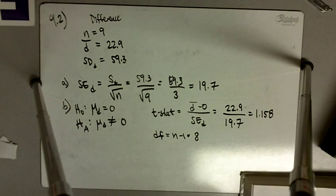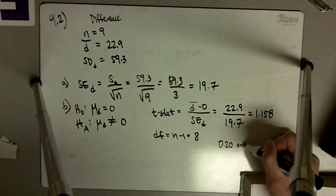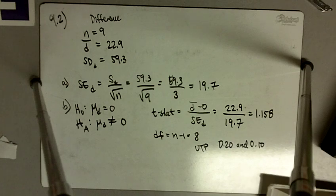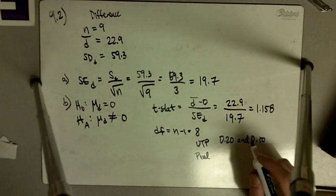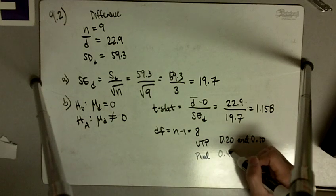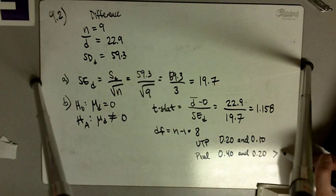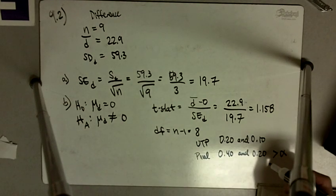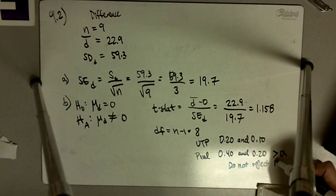And so we want to look for 1.158 in our T table with 8 degrees of freedom. So if we look up 8 degrees of freedom, we see that it's in between 0.20 and 0.10. So our upper tail probability is in between 0.20 and 0.10. And then, so our P value, because it's non-directional, this means our P value has two tails. So we have to double our upper tail probability. So our P value is going to be between 0.40 and 0.20. So we do not have, both of these are greater than alpha. Alpha is equal to 0.10. And so here we do not have enough evidence, so we do not reject the null hypothesis.